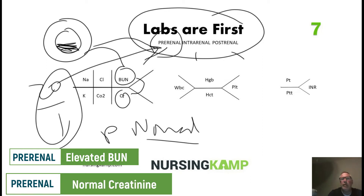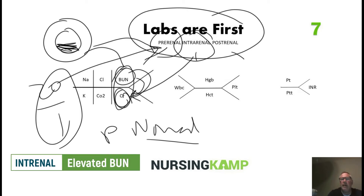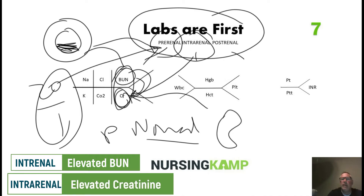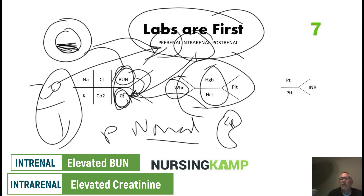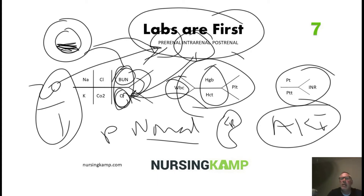In intra-renal failure, the problem has moved inside the kidney: both BUN and creatinine are elevated. Other causes — bleeding, infection, or anticoagulants — can all cause acute kidney injury. Labs play an important part; BUN and creatinine are pivotal in the identification and diagnosis of acute kidney injury.